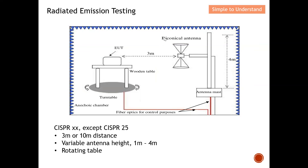This diagram shows the setup for Radiated Emission testing. This setup is valid for all CISPR standards except CISPR 25, which I'll explain on the next slide. For the remaining CISPR standards — such as CISPR 11 and CISPR 22 — this setup applies. One key point: the distance between your EUT and the antenna can be either 3 meters or 10 meters, and in some cases even 30 meters, though nowadays 3 meters and 10 meters are most common.